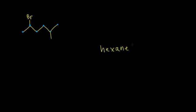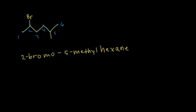When I think about how to number this one, there's a tie: numbering from the left gives the bromine a two, and numbering from the right gives the methyl group a two. To break that tie, you use the alphabet rule — bromo versus methyl, B beats M alphabetically. So I start from the left: one, two, three, four, five, six. The methyl group is at five and bromine is at two. The full IUPAC name is 2-bromo-5-methylhexane.